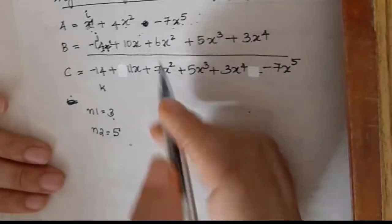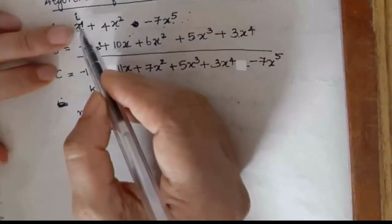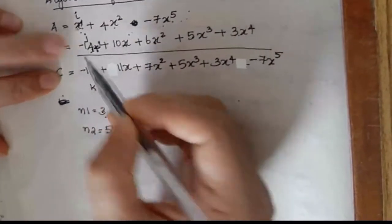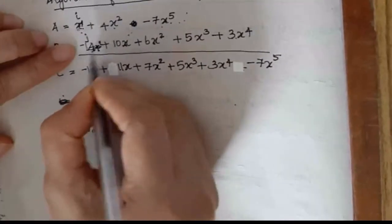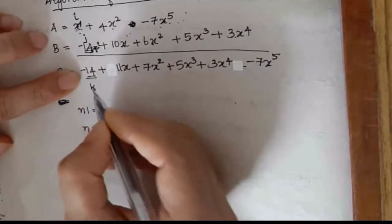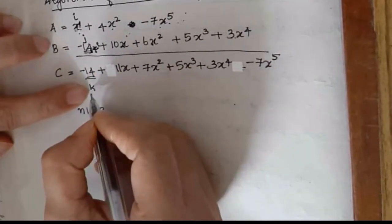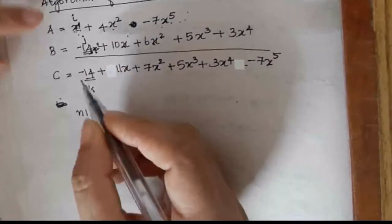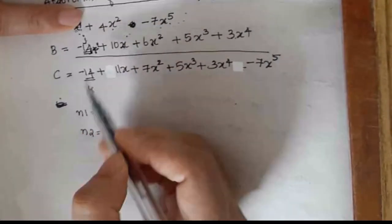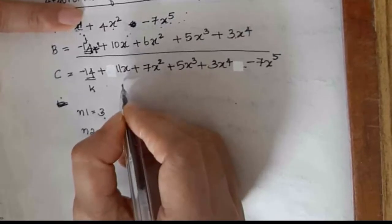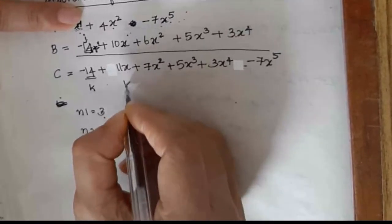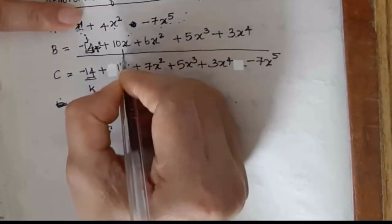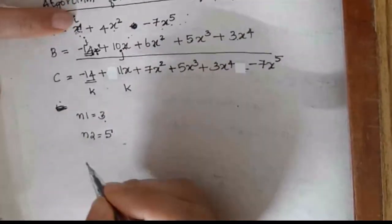So we copy minus 14 and its exponent 0 into C. Now j and k are incremented. k will point to the next position and j will point to the next position in B. i remains where it was.